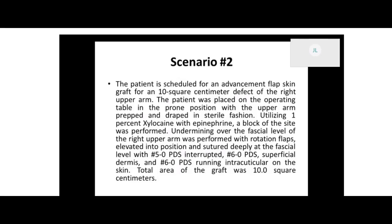So what was the intent of our procedure here? If we go down to where it starts undermining — undermining over the fascial level of the right upper arm was performed with rotation flaps — so the intent was to move the skin, right? For this skin graft. So how does that match to our definition if we did rotation flaps of skin?